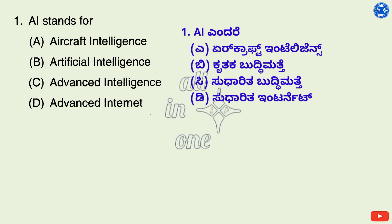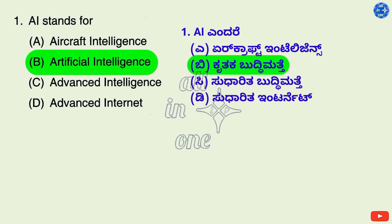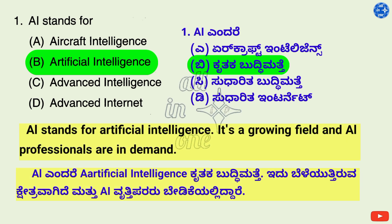AI stands for — Options: A. Aircraft Intelligence, B. Artificial Intelligence, C. Advance Intelligence, D. Advance Internet. Right answer is B: Artificial Intelligence. AI stands for Artificial Intelligence.